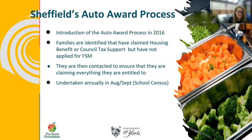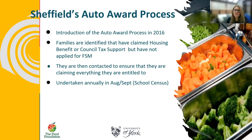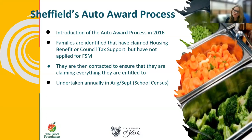The result was the introduction and implementation of the auto award process in 2016 as a mechanism to increase free school meal eligibility and maximise pupil premium funding for schools. Essentially, they identify families that have claimed housing benefit or council tax support but have not applied for free school meals, then contact those families to ensure they're claiming everything they're entitled to. This is an annual process taking place during August and September, as pupil premium eligibility is based on free school meal eligibility recorded on the October school census.